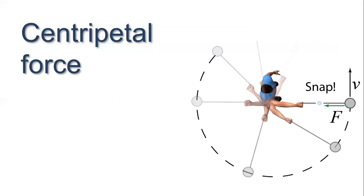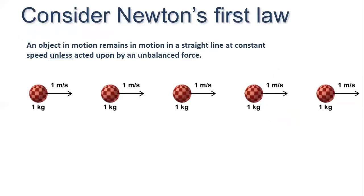Our first topic is centripetal force. A man is rotating an object with velocity v, and a force F is applied on this object. Consider Newton's first law: an object in motion remains in motion in a straight line at constant speed unless it is acted upon by an unbalanced force.